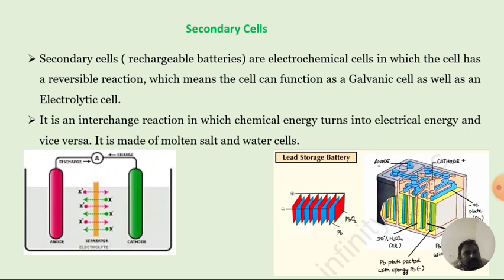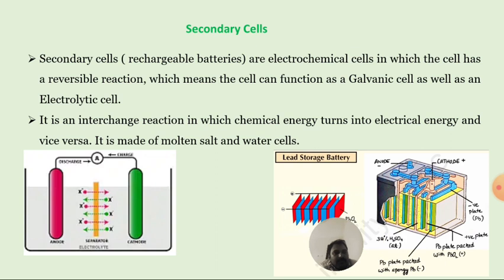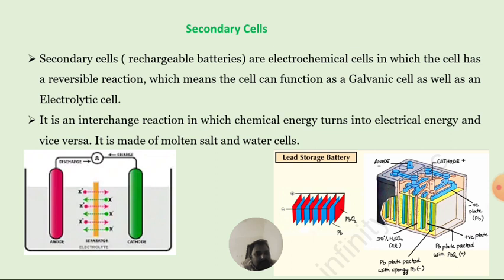In secondary cells, chemical energy turns into electrical energy and vice versa. They are made up of molten salt and water cells. Here you can see the lead storage battery, which is a secondary cell. You can see the anode and cathode terminals. In this case, sulfuric acid acts as the electrolyte — that is almost 10% sulfuric acid. Lead plates are placed with a sponge; the lead plate will be the negative terminal, and the lead plate packed with lead oxide acts as the positive terminal.